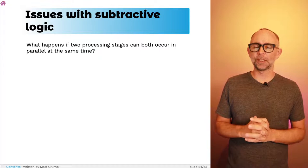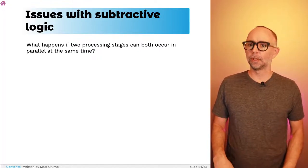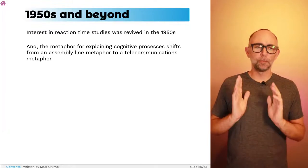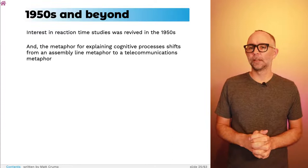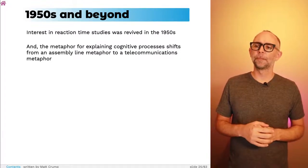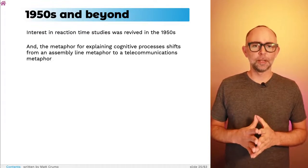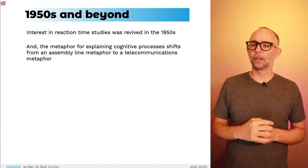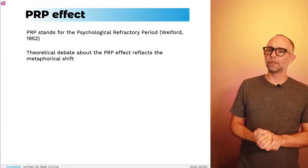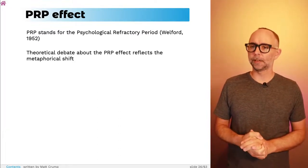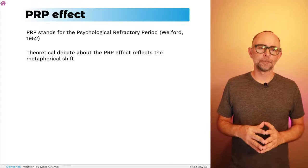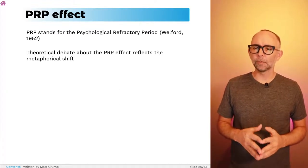We're going to jump in time to the 1950s, moving past the behaviorist period. People had been doing reaction time studies throughout the early 1900s, but as we move into the 1950s, we see the metaphor for explaining cognitive processes shift from the assembly line metaphor — credited to Donders — to a telecommunications metaphor. We'll see evidence of that by looking at the PRP effect, the psychological refractory period. Debate about explaining why this effect happens reflects the metaphorical shift.